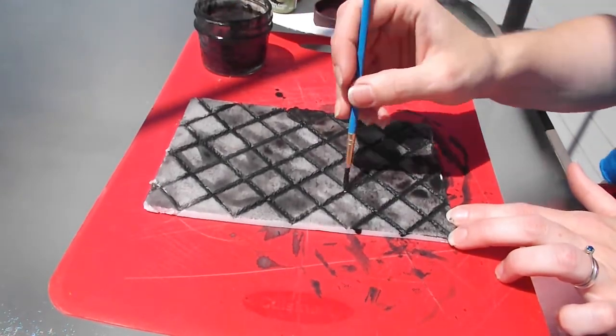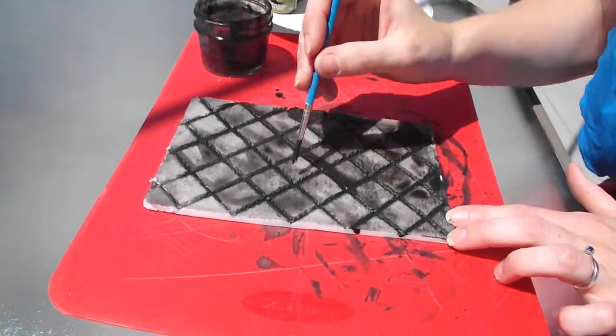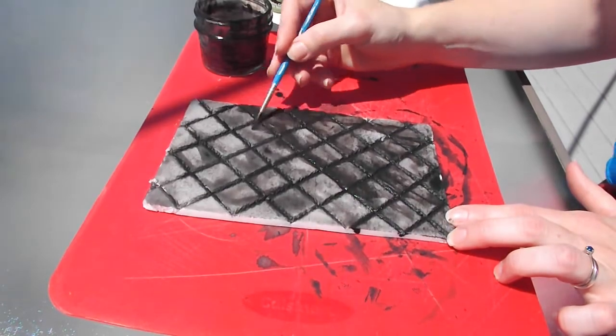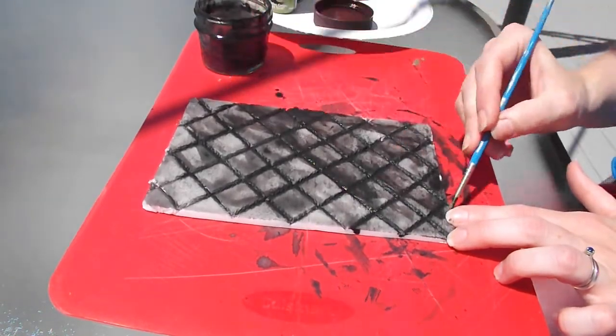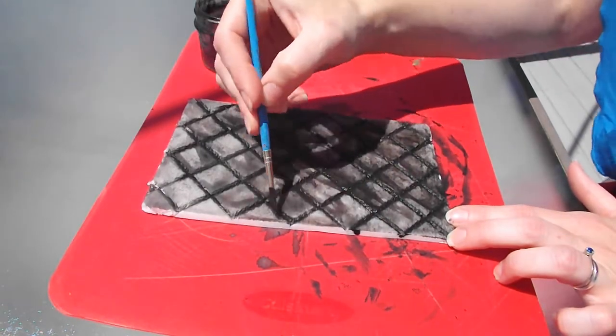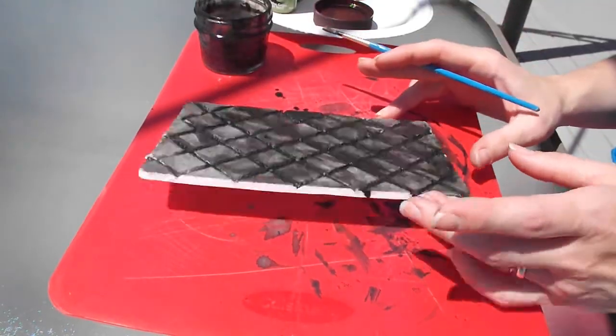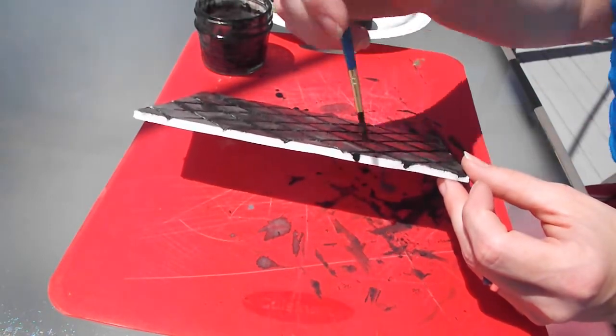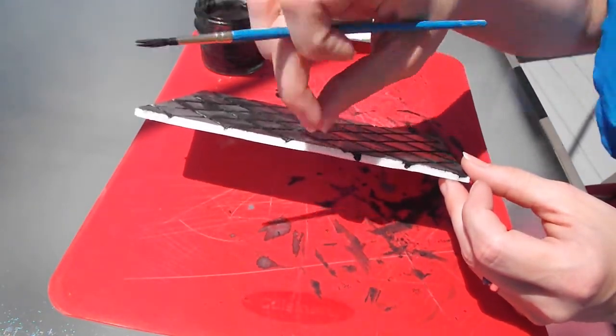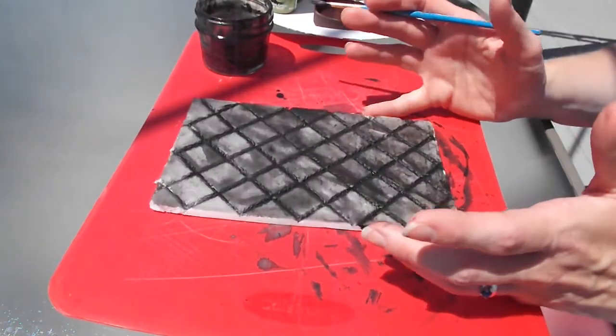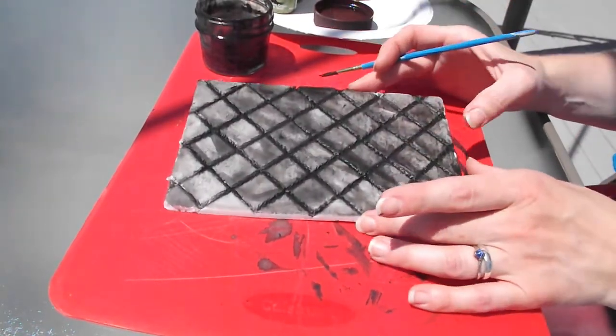But basically, this is the gist of getting your black wash on. Again, keep it thin, work it mostly into the grout lines, and then just move it around the top of your tiles. Don't worry if it's not an even coverage because that's what's going to give you the aged off look. And if it's something where the edge of the tiles are exposed, then you're going to want to do a black wash around this as well. Don't forget to wrap your lines around the edge as well with a ballpoint pen.